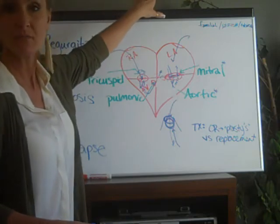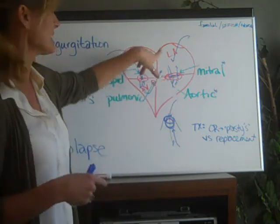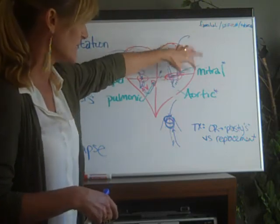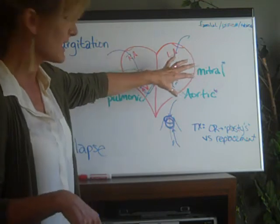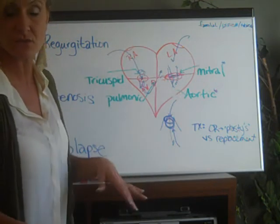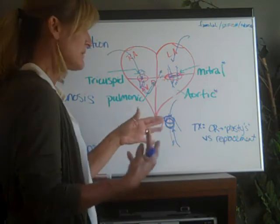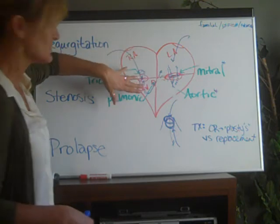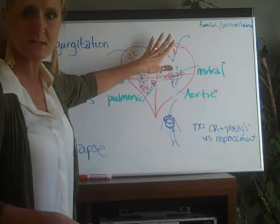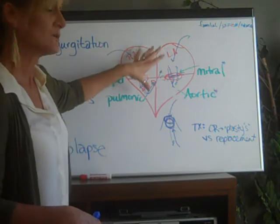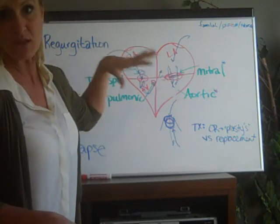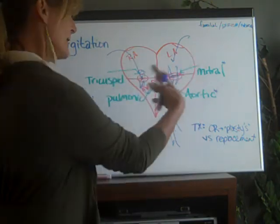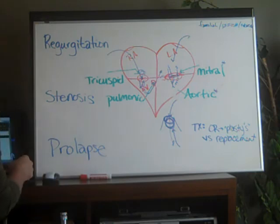If it's the mitral valve, watch for stroke — if the clot goes up into the carotid arteries you'll have a stroke. It could go to the coronary arteries and cause an MI, or down to the renal arteries causing reduced urinary output. If the problem is in the tricuspid valve, watch for signs and symptoms of PE — the clot would go to the lungs and the patient will have trouble breathing and dyspnea. It really matters which valve was repaired or replaced when monitoring for symptoms.